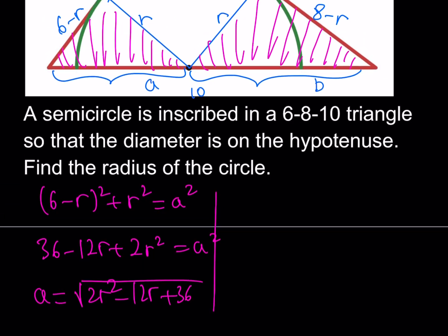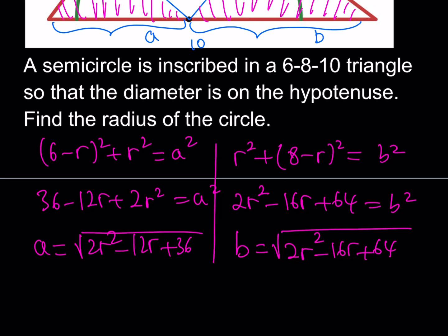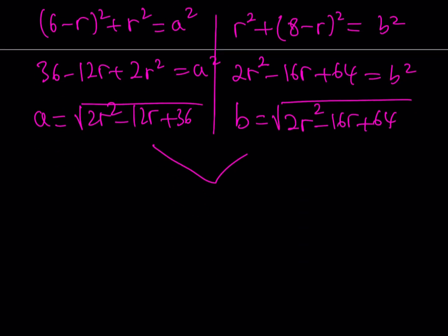So the legs are r and 8 minus r, so it's going to be r² + (8-r)² = b². From here we get r² + r², which is 2r², minus 16r plus 64, that should equal b². If you square both sides, just like a, similarly we're going to be getting the value of b, and that should be this one. So, now I got a and b, and I'd like to put it together. Well, they make up the hypotenuse, right? And the hypotenuse is 10, so that means that a + b = 10. So that's how we put it together.